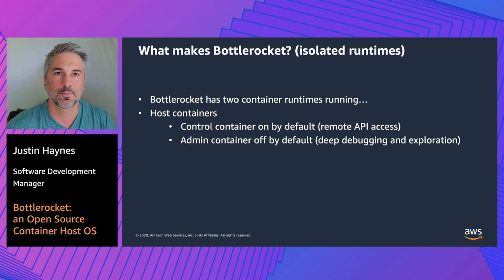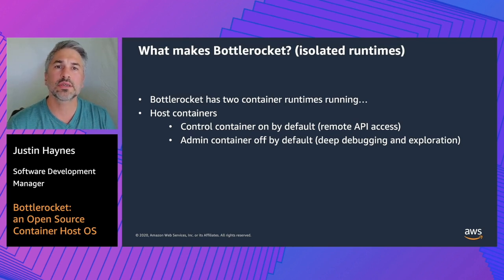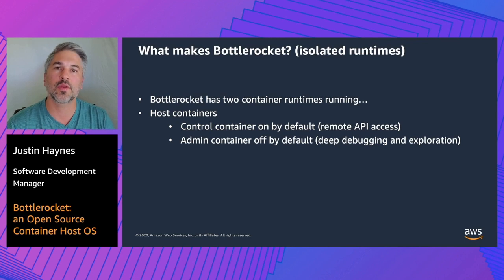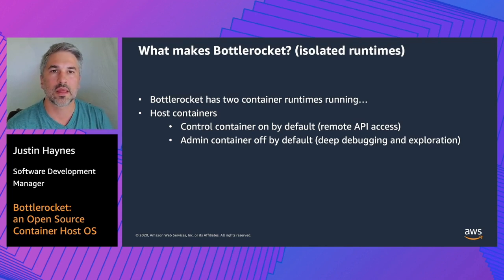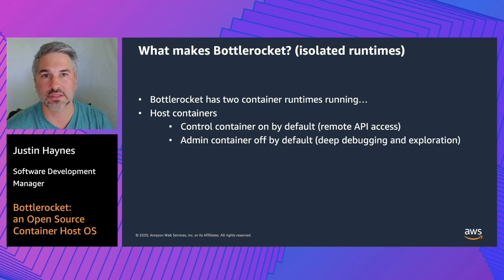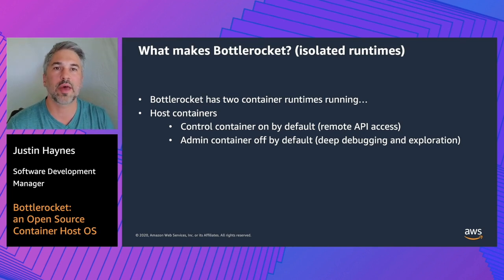BottleRocket also has isolated container runtimes. For the Kubernetes variants, we use ContainerD for both, but it could be swapped for Docker or something else. One ContainerD is the one the Kubelet knows about — where your pods land, and it's very configurable. The other ContainerD is for running what we call host containers, which are often highly privileged and made for manipulating the system. By default there are two host containers — one on and one off. The one that's on is the control container, which contains AWS Systems Manager and our API socket, letting you use remote commands to change configuration values. The other is the admin container — Amazon Linux 2 in a container that gives you a rich debugging experience with the full package ecosystem.